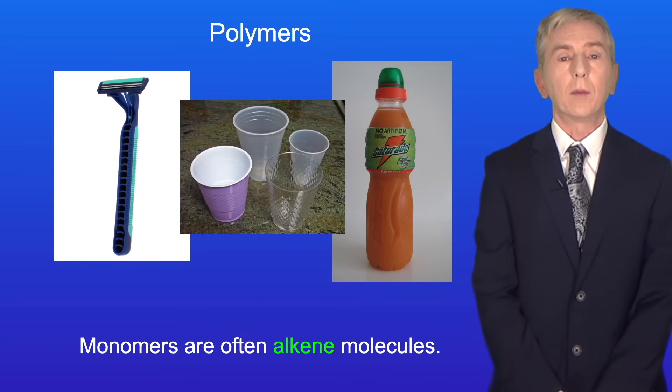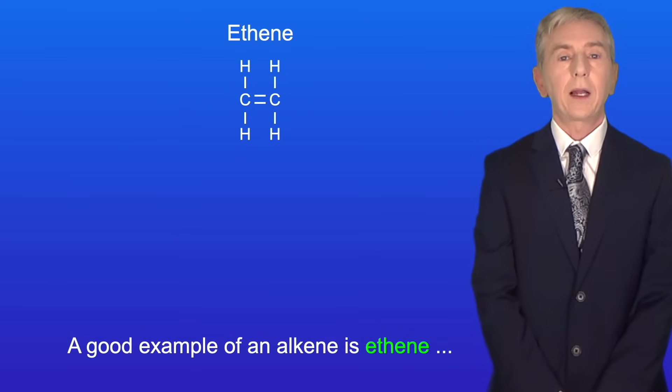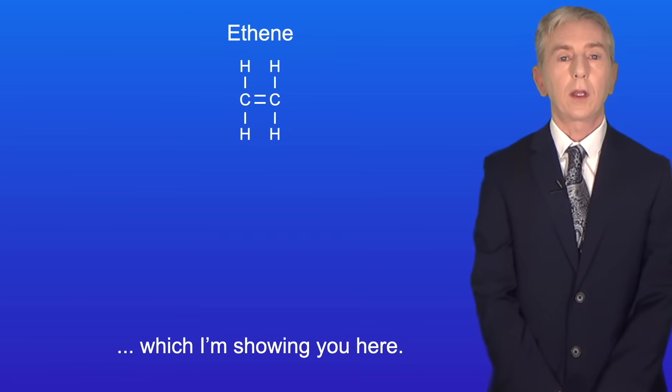Monomers are often alkene molecules and you'll find out more about alkenes in the organic chemistry topic. A good example of an alkene is ethene which I'm showing you here.